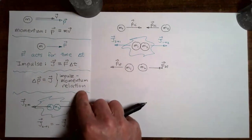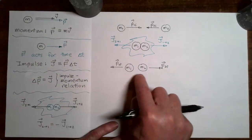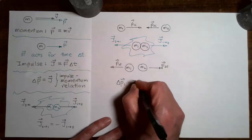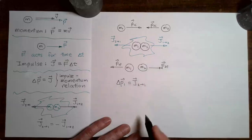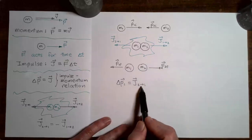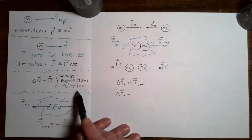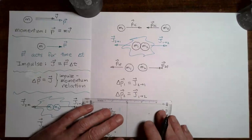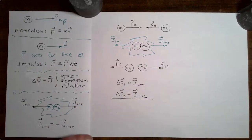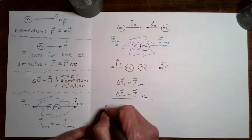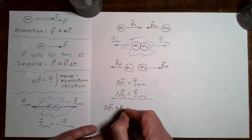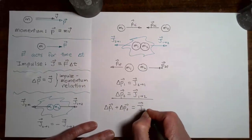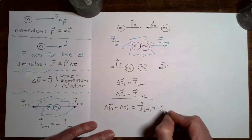Now we're going to apply the impulse-momentum relation to each of the masses. For mass one, the change in the momentum of mass one is equal to the impulse it received from mass two: change in momentum one equals impulse two on one. For mass two, the change in the momentum of two is equal to the impulse that one gave to two. Now we're going to add these two equations together. When I add the left sides, I get change in momentum of one plus change in momentum of two. When I add the right sides, I get impulse two on one plus impulse one on two.